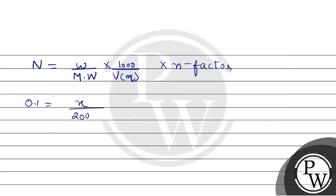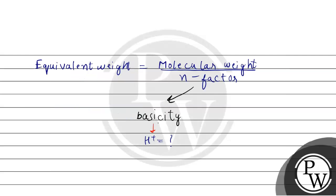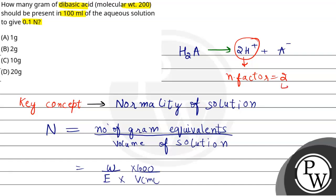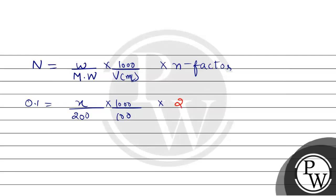I'm writing the unknown weight as x. Molecular weight is 200, volume is 100 mL. Now we need the n-factor: dibasic acid means it can donate 2H⁺, so n-factor equals 2. Substituting: 0.1 = x/(200) × (1000/100) × 2. Solving, the 10s and zeros cancel, and we get the value of x.